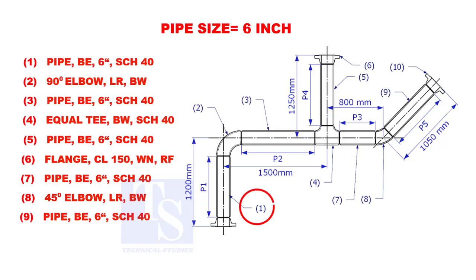Let us calculate the length of pipe 1. To calculate the length of pipe 1, we need to reduce the flange height and the elbow center from the measurement 1200 millimeters.